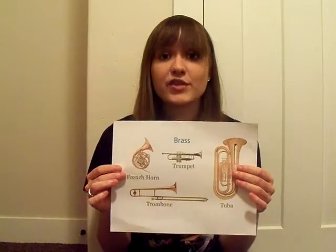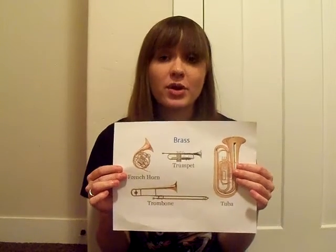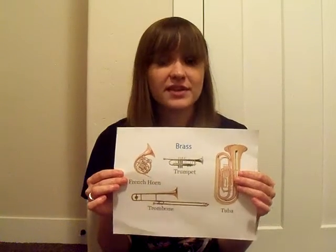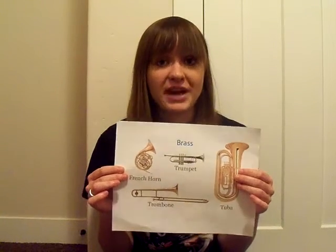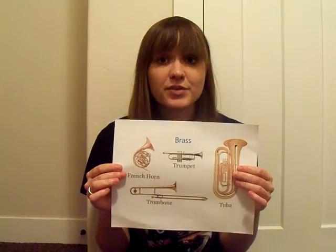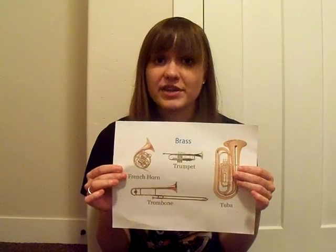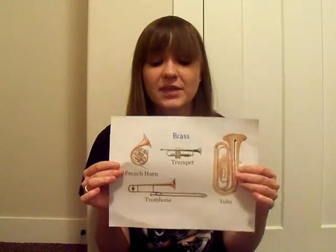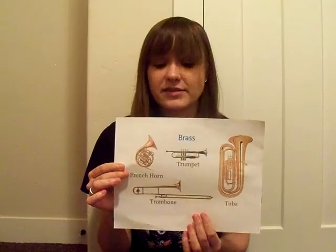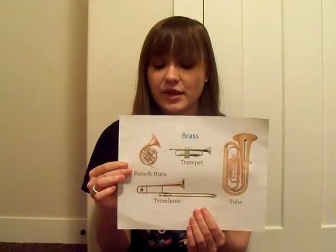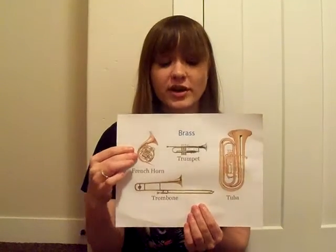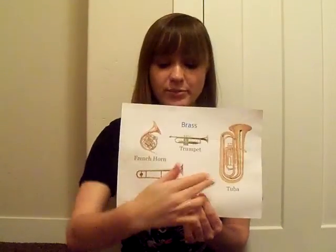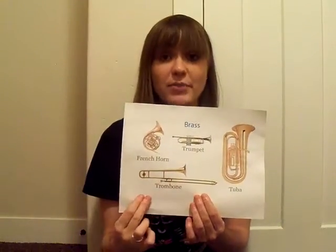In the brass family, the musician will form their lips to make a buzzing sound — that's like when you're blowing a raspberry — to push air throughout the instrument to make the sound. Some instruments in this family include the French horn, the trumpet, the tuba, and the trombone.